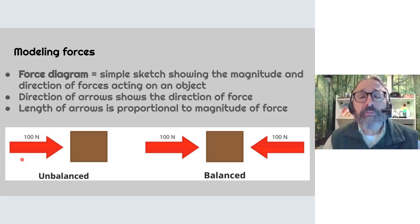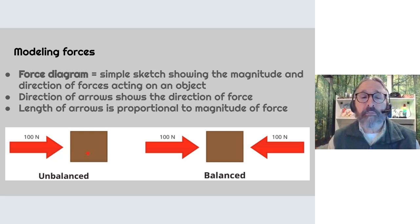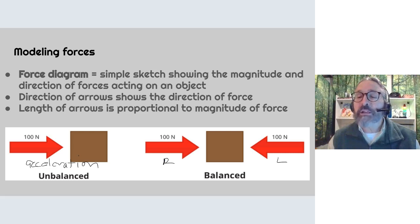In this first picture, you can see an unbalanced force — it has one arrow moving to the left with 100 newtons pushing to the left, with no other forces shown, so this object is accelerating to the left. Here are balanced forces: 100 newtons to the right and 100 newtons to the left equally balance each other out.